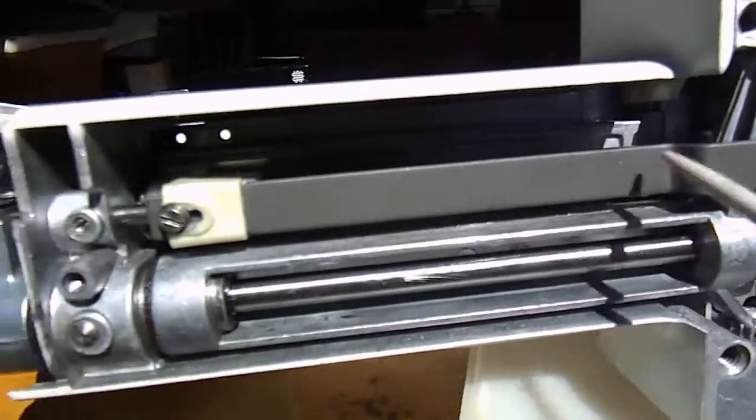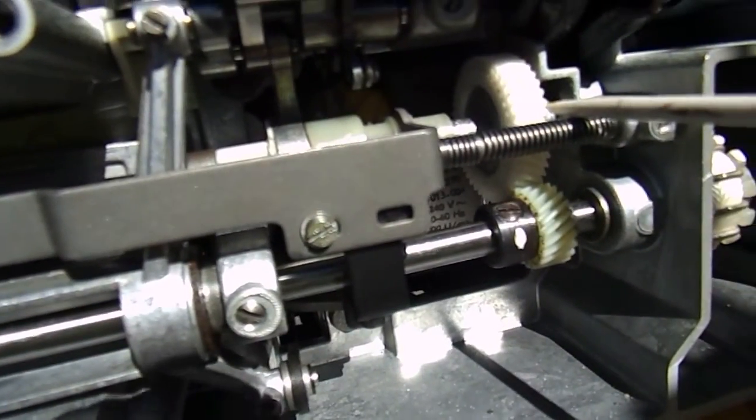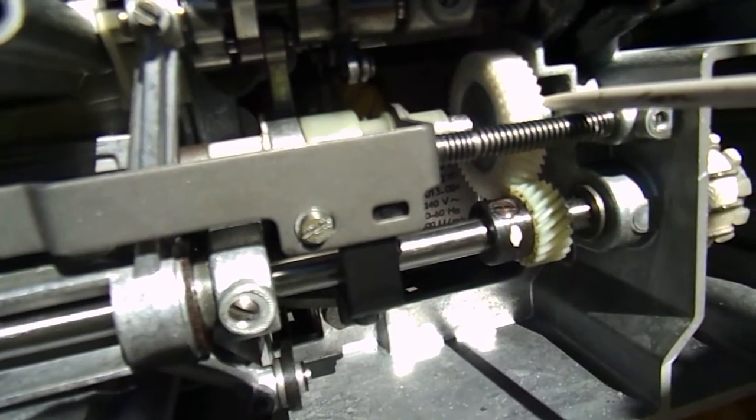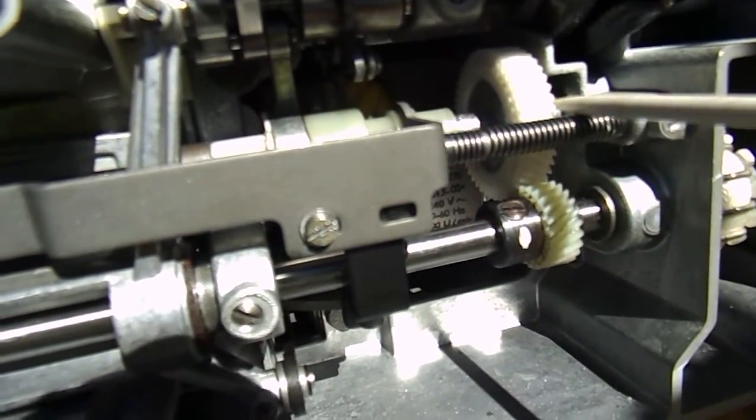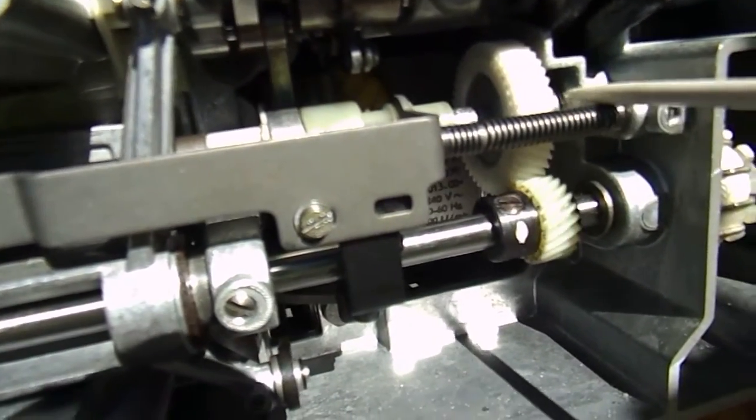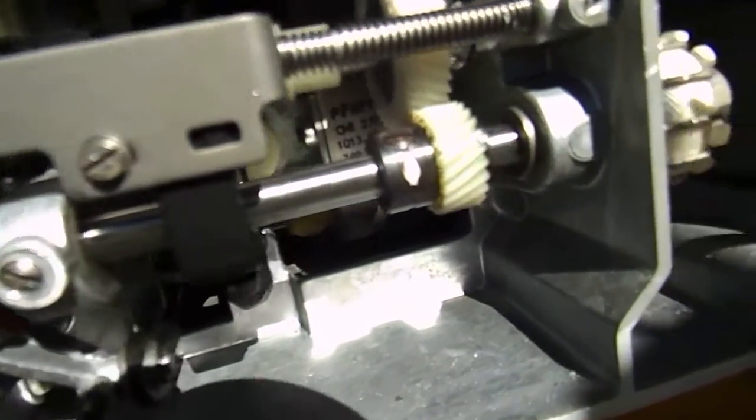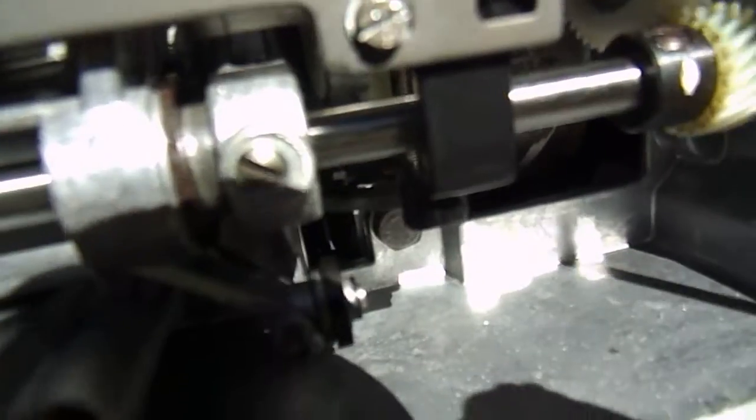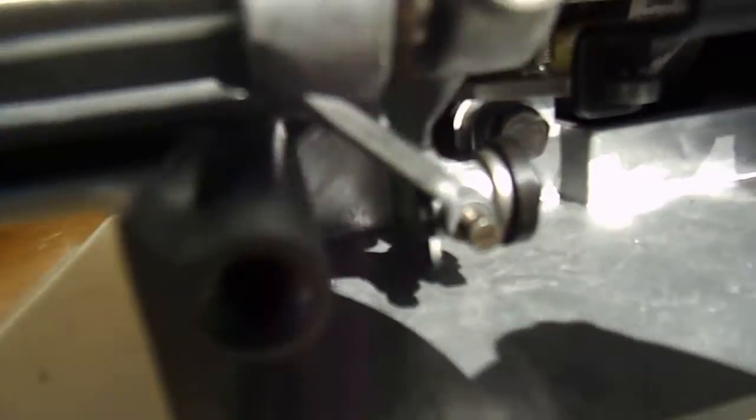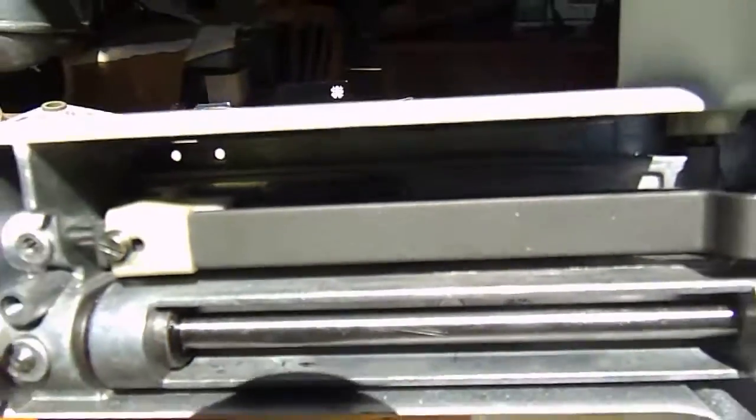So once you've slid that out, you then remove that gear, you put the new one on, and then you slide it back in. So then you go along and put the circlips in and tighten that, tighten that, and put the circlips back on here as well.